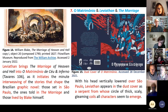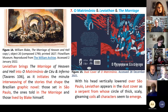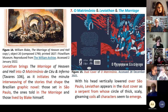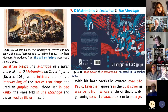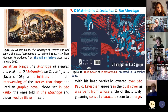We have the first character taken from the Marriage — the Devil. He comes as he initiates the interweaving of the stories that shape the Brazilian graphic novel: those set in São Paulo, those told in the Marriage, and those lived by Blake himself. What we have is a very complex compound of these three — or even more — because the stories of the four São Paulo protagonists are four stories. So we have at least seven stories: the stories of the seven protagonists, the stories coming from the Marriage, and the story of Blake himself, who is both author and a character in the book.